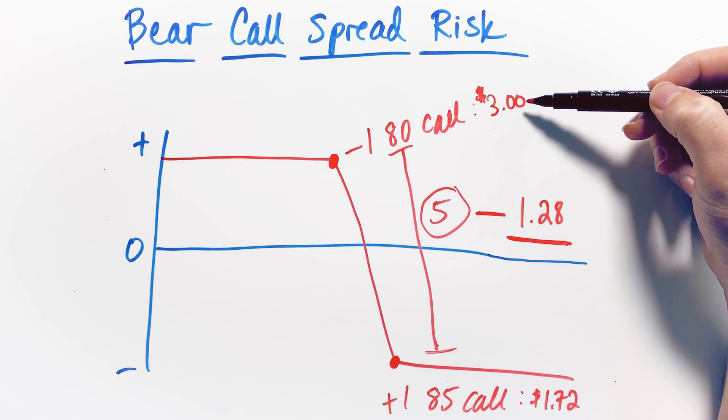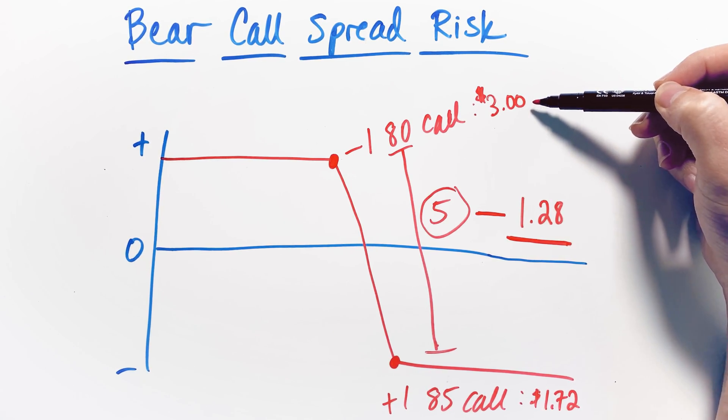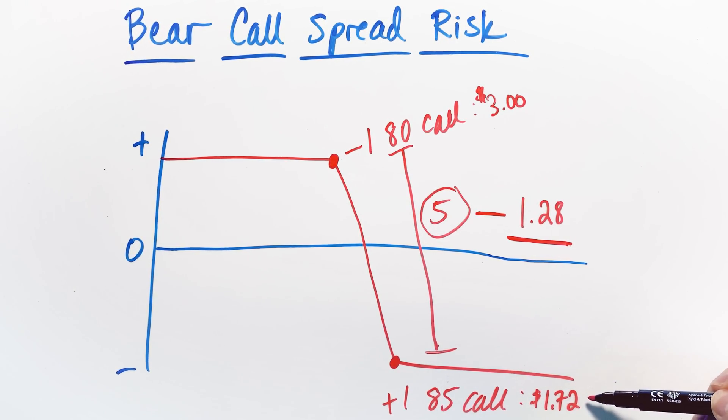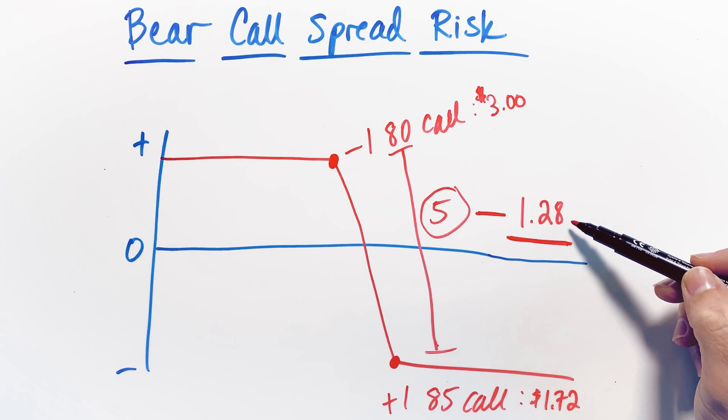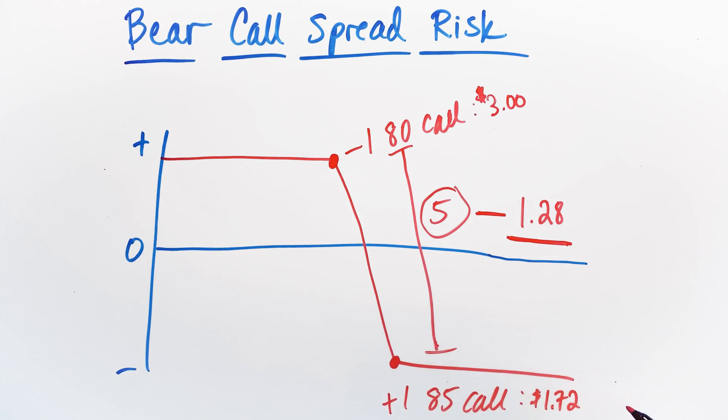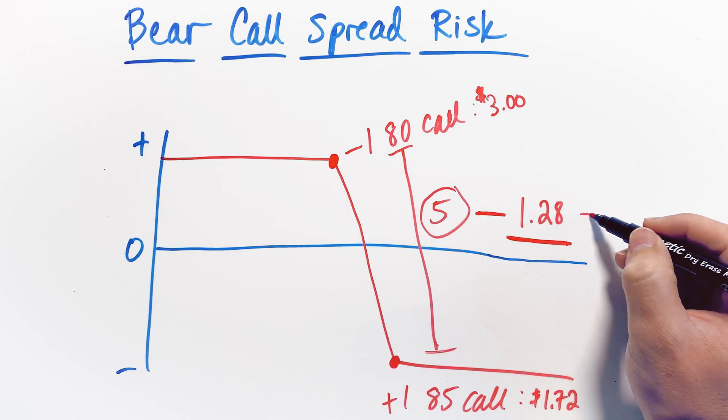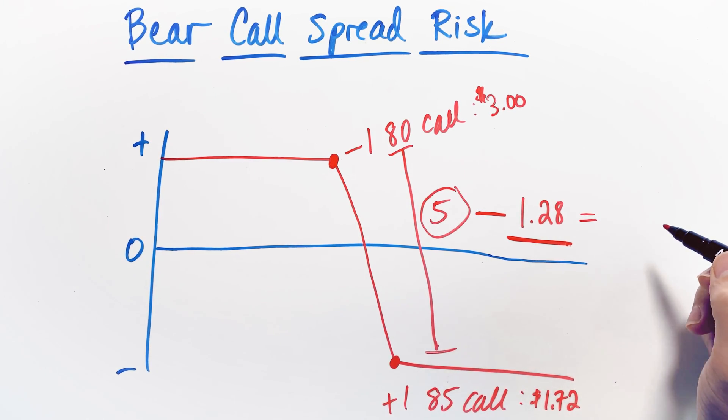We sold a call option for $3. So we collected $3, but we had to use some of that money, some of those proceeds to buy the 85 strike call for $1.72. And so now that we bought this for $1.72, you can see that the net credit that we collected was $1.28. So we take our $5 width of the spread and we subtract the $1.28 from that amount. And that actually gets us what our net risk is on this position, which is just $3.72. So this is the actual risk in the position.